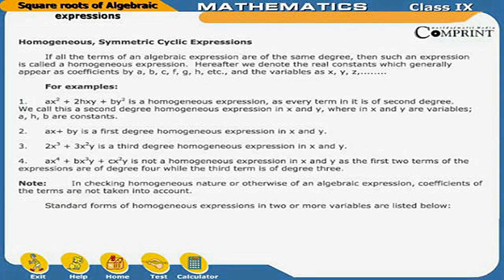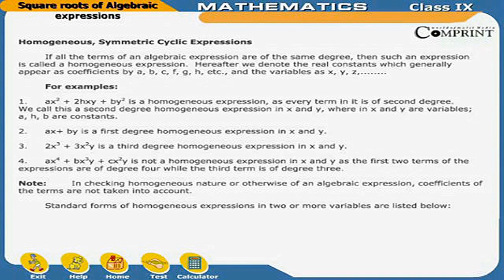Homogeneous Expressions. If all the terms of an algebraic expression are of the same degree, then such an expression is called a homogeneous expression. Hereafter, we denote real constants which generally appear as coefficients by a, b, c, f, g, h, etc., and variables as x, y, z, and so on. For example, ax² + 2hxy + by² is a homogeneous expression as every term in it is of second degree.